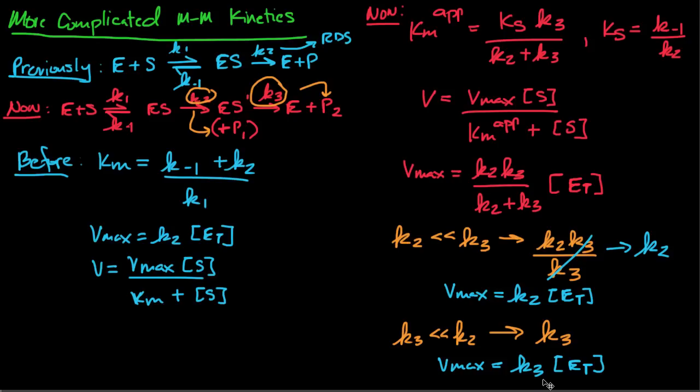Now, the takeaway message from this is when we have a release of product that's determined by multiple steps, you use the slowest step. Since we don't really know what the slowest step is, oftentimes they'll mention that K has this term Kcat.